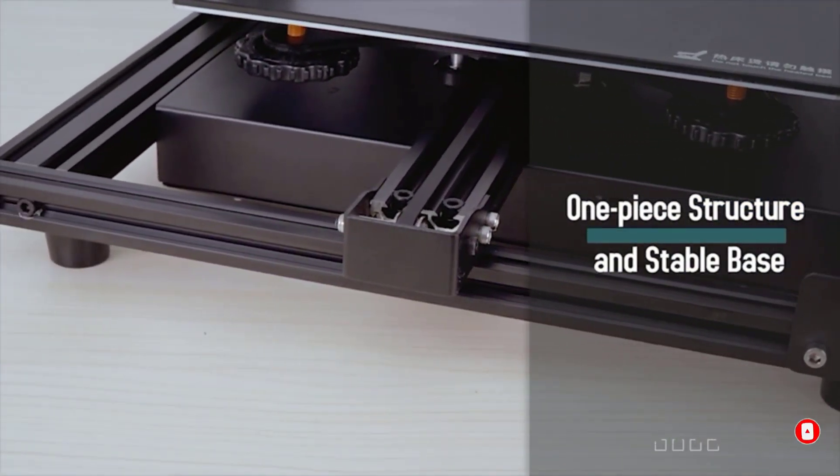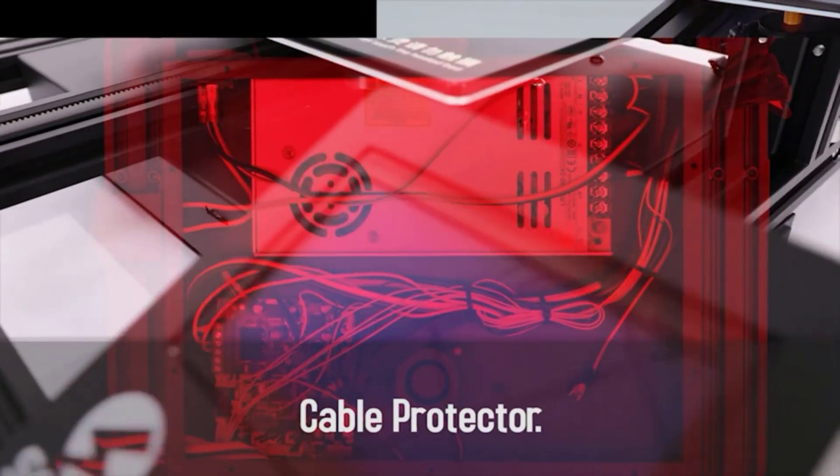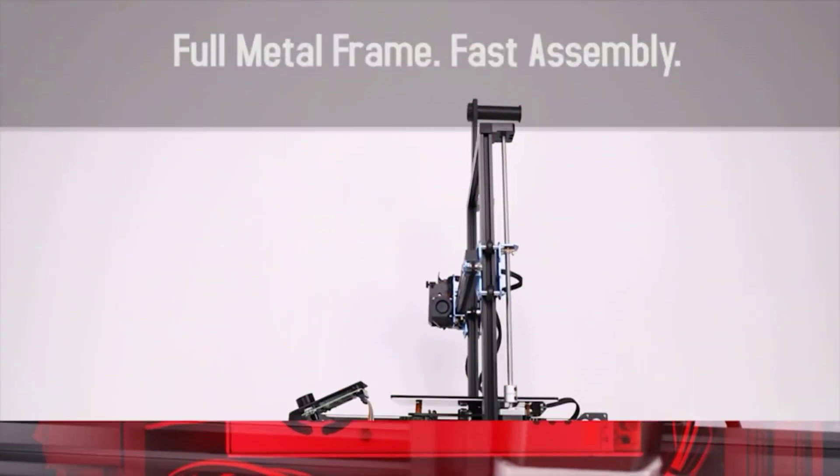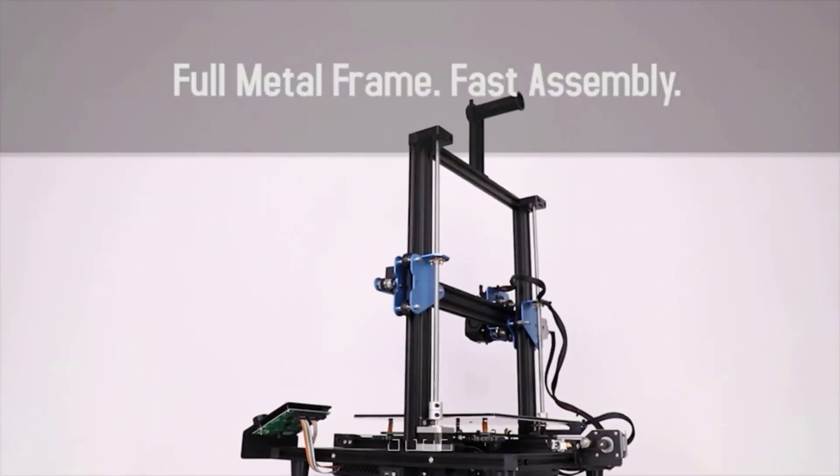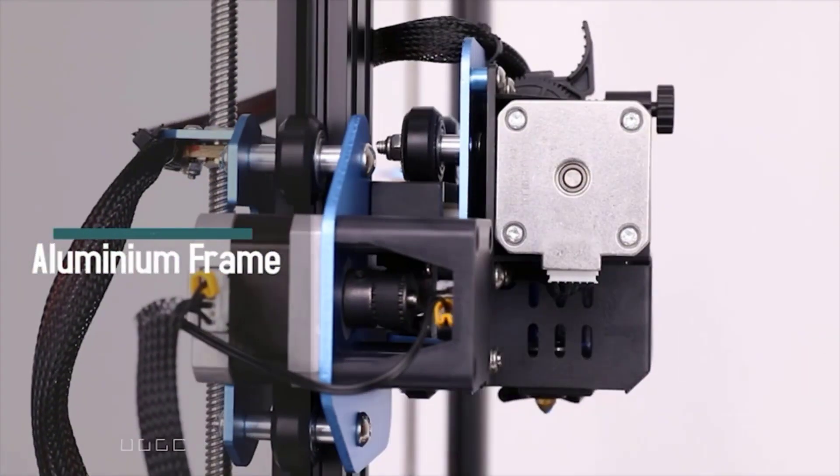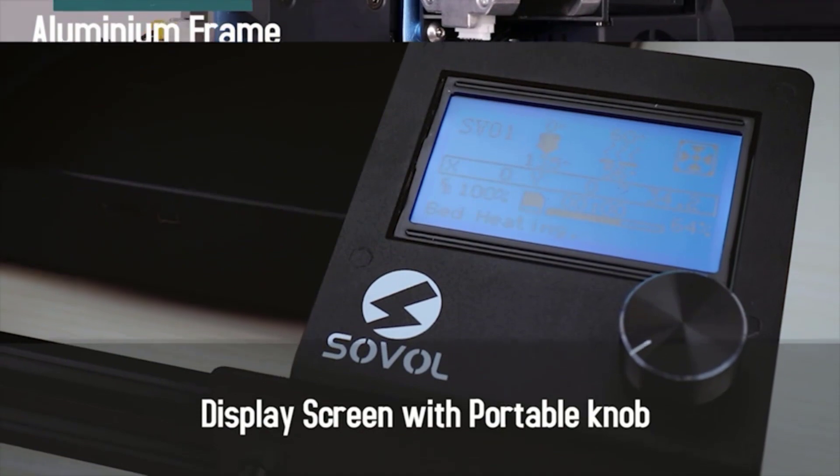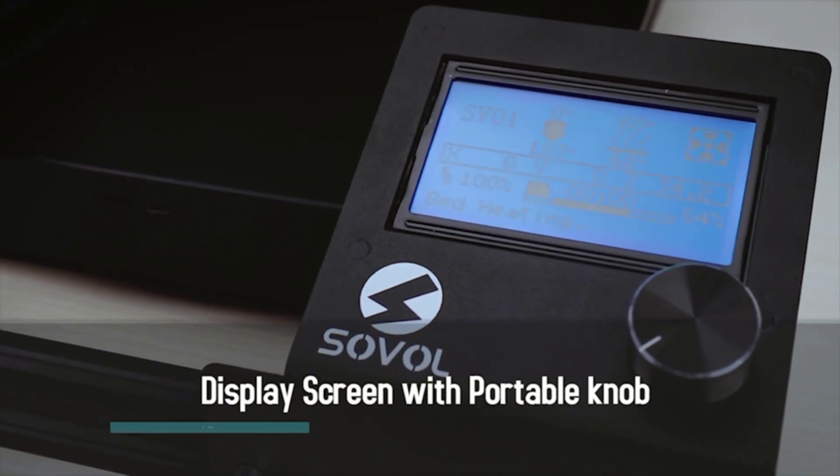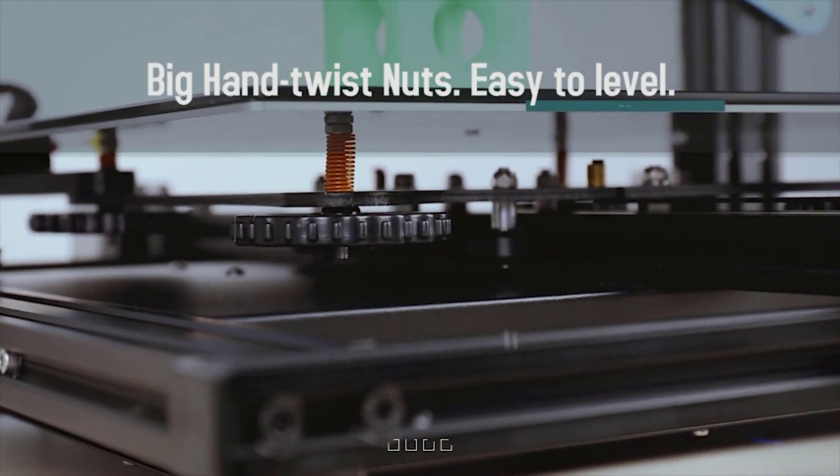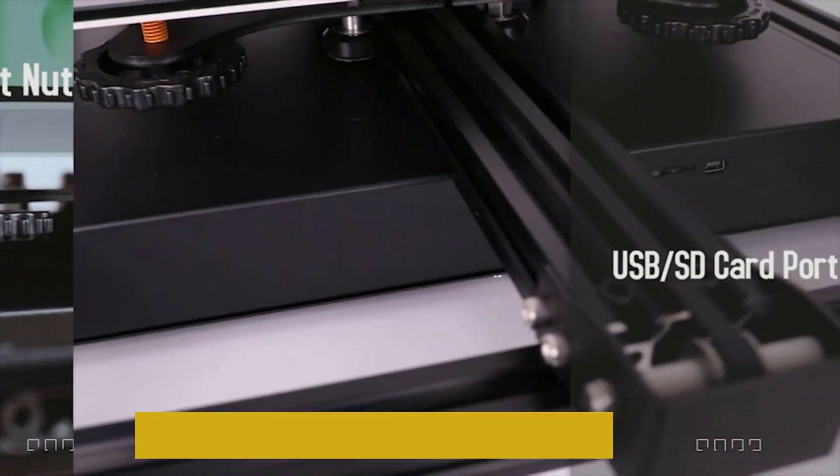The Sovel comes with a direct-drive extruder, as compared to Ender's Bowden. This is suited for flexible and abrasive filaments like TPU. Direct-drive also prevents excessive stringing from occurring. But the downside of these extruders is that the print times are slower. The glass bed of the SV-01 allows for better sticking during operation as well as better removal once the process is done.